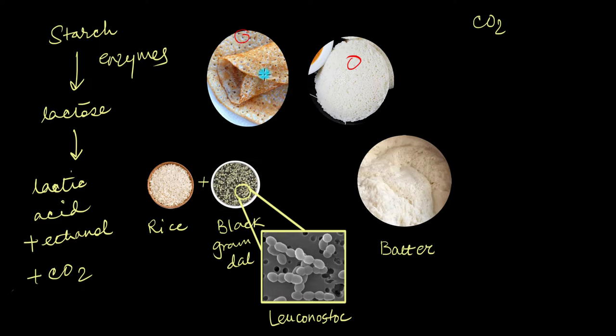Here, however, in idlis and dosas, not only we have lactic acid with us but we also have ethanol and carbon dioxide. And this carbon dioxide increases the volume of the batter almost by three times. You can actually see the tiny bubbles inside the batter. When you steam the idlis or make your dosas, these carbon dioxide bubbles will pop, leaving behind that perforated appearance.